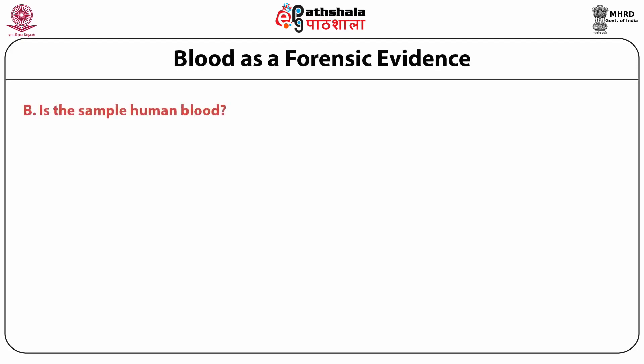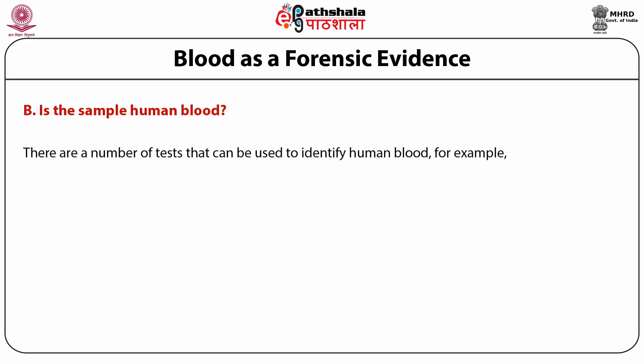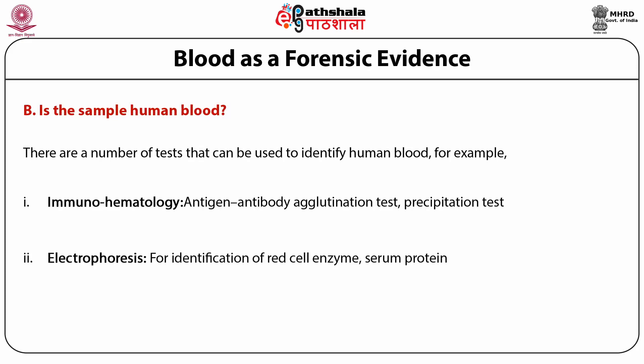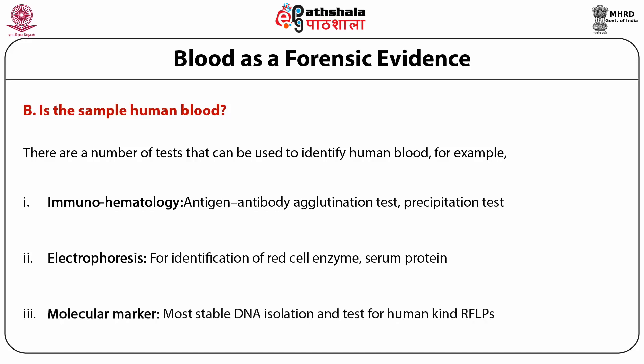To identify whether blood is of human origin, there are several tests: immunohematology (antigen-antibody agglutination or precipitation test), electrophoresis (for identification of red cell enzymes and serum proteins), and molecular markers (stable DNA isolation and tests for RFLPs). These methods help confirm the species of origin of the blood sample.